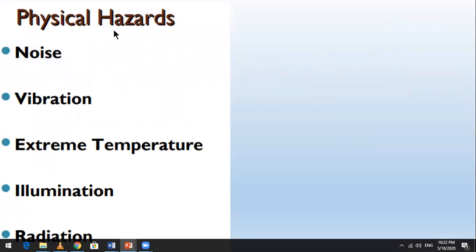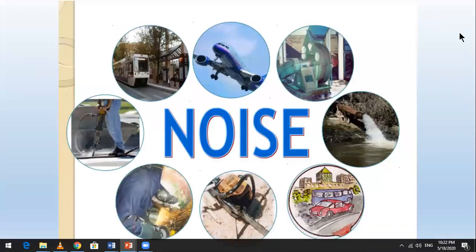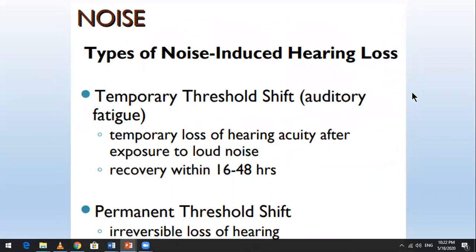Physical hazards include noise, vibration, extreme temperature, illumination, and radiation. Regarding noise — from drilling, machinery, and other sources — noise pollution is a significant hazard. Types of noise-induced hearing loss are among the key effects of noise hazards.